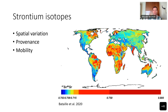Strontium isotopes show a spatial variation due to processes such as the underlying geology and input of sediments through wind and water processes, which makes them excellent for provenance studies to determine where something or someone came from, but also for mobility — so whether a human or an animal in the past migrated.